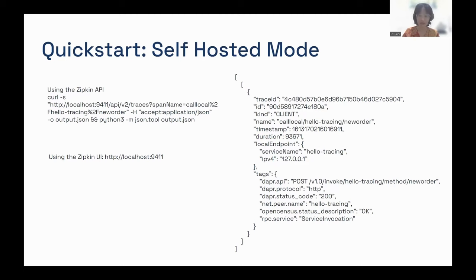If you decide to use Kubernetes on a cloud infrastructure, you should make sure that your Kubernetes cluster already has Dapr installed and that each of your services has a Dapr sidecar container to emit the traces. You can also configure which observability tools you want to use as the monitoring tools.